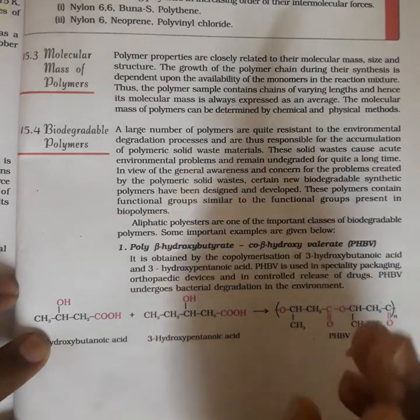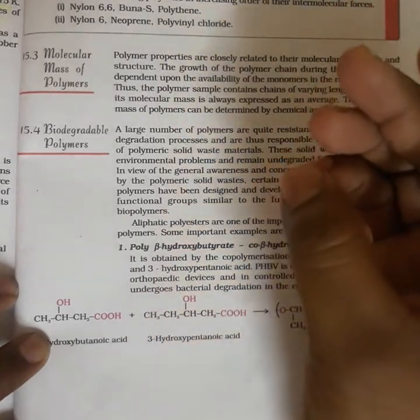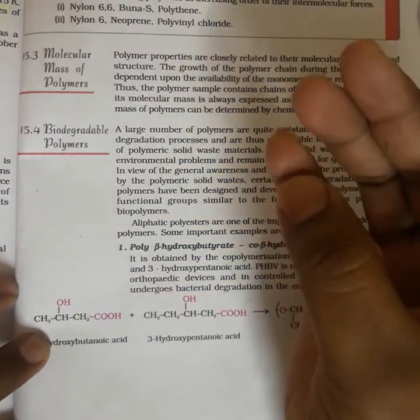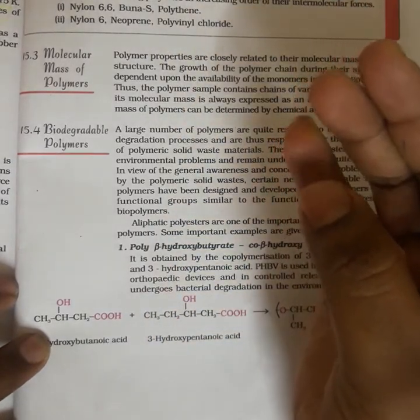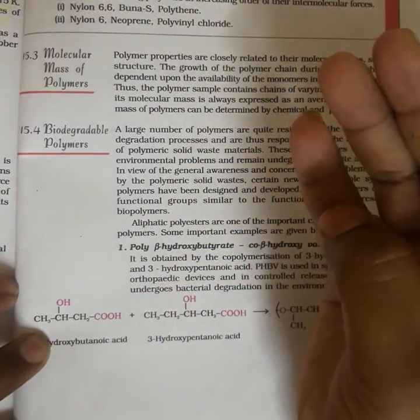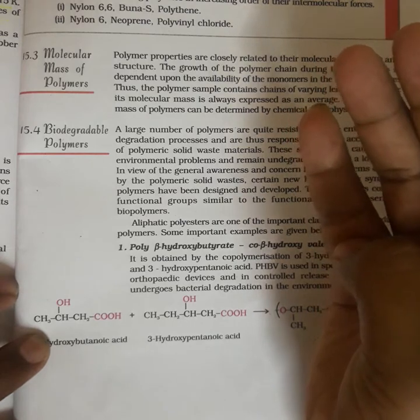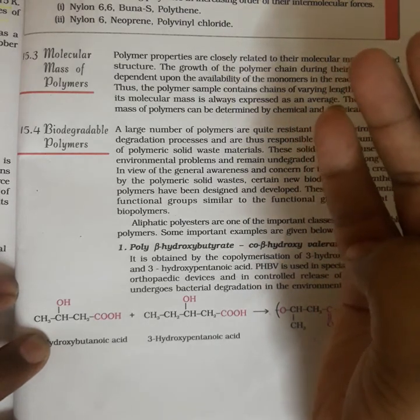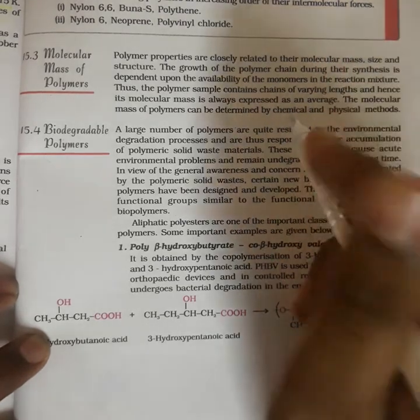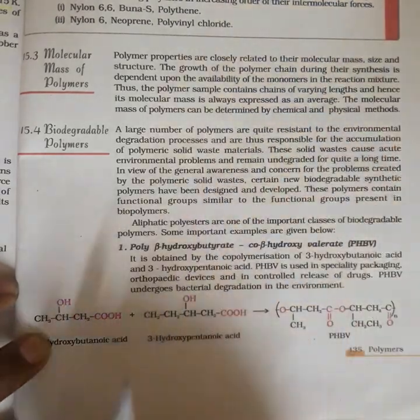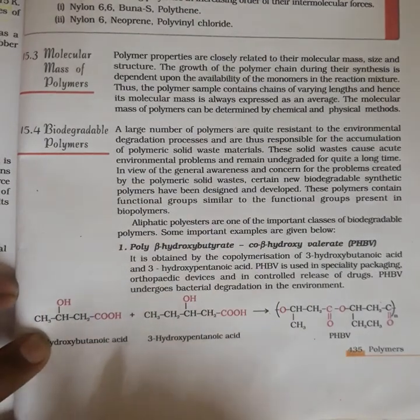The polymer which can be degraded by environmental processes like oxidation, hydrolysis, or natural degradation processes like microbial contamination is called a biodegradable polymer.